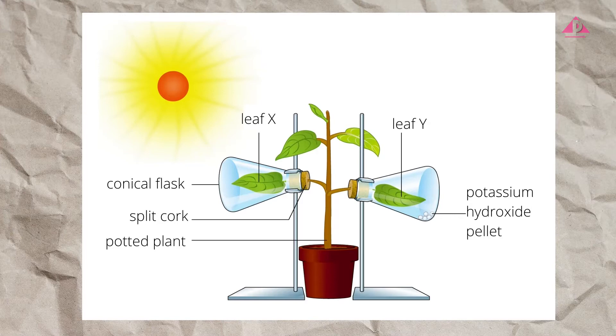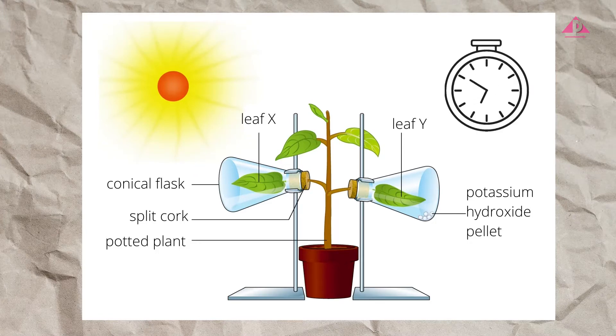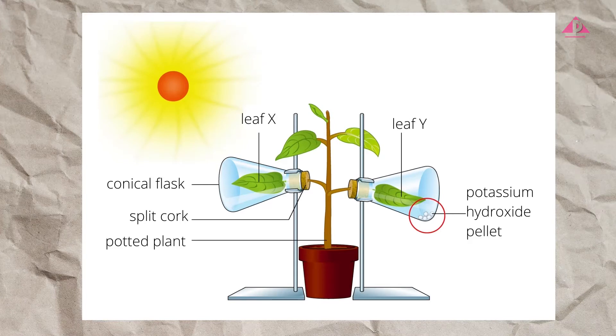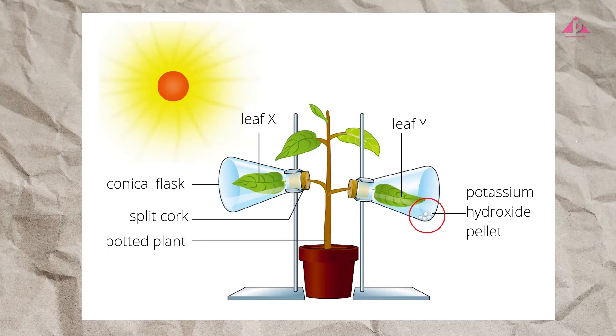To understand more about the design of this experiment, we can first note the difference between the two conical flasks. The conical flask enclosing leaf Y contains potassium hydroxide pellets, while the other conical flask doesn't.